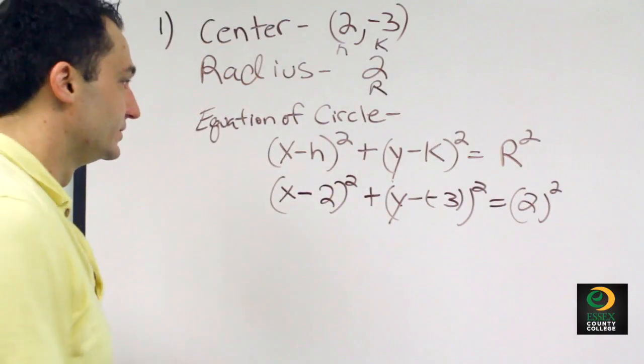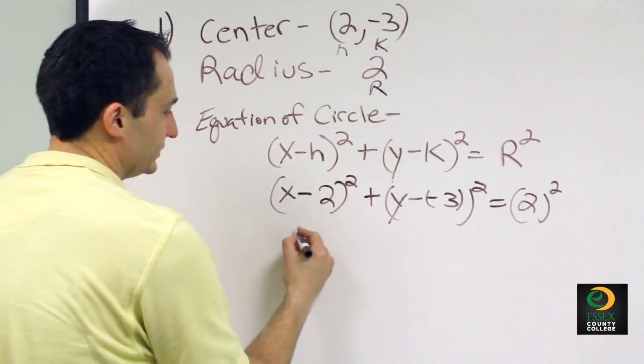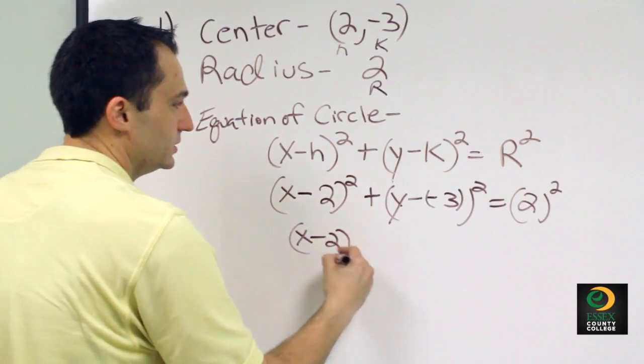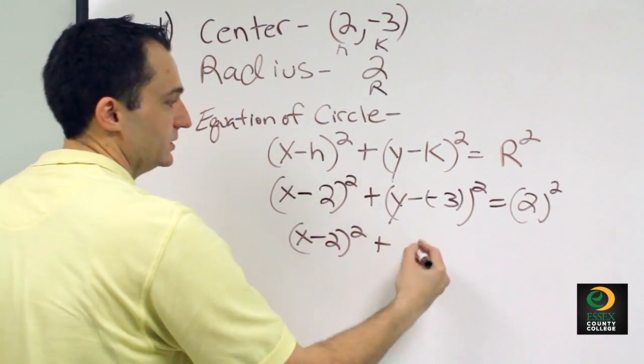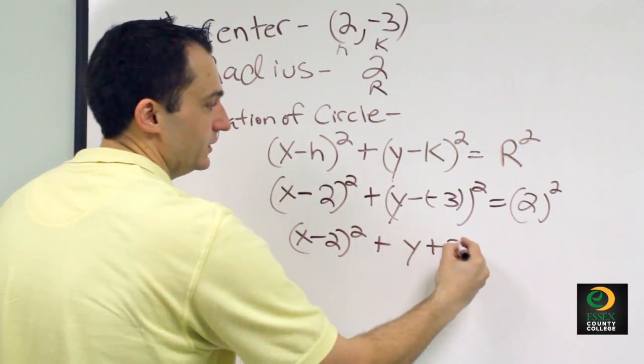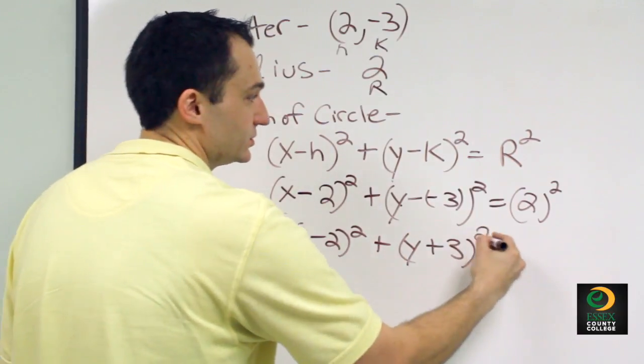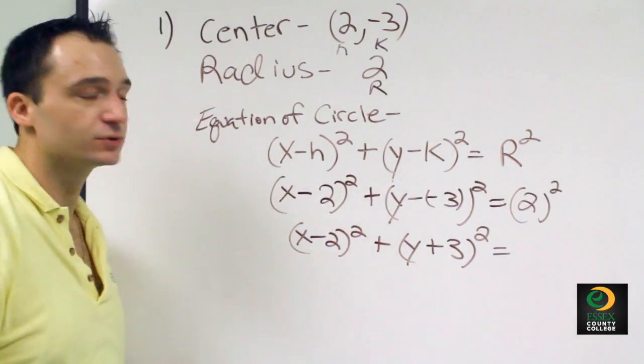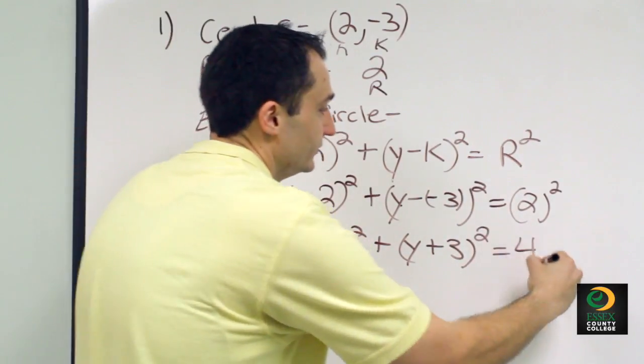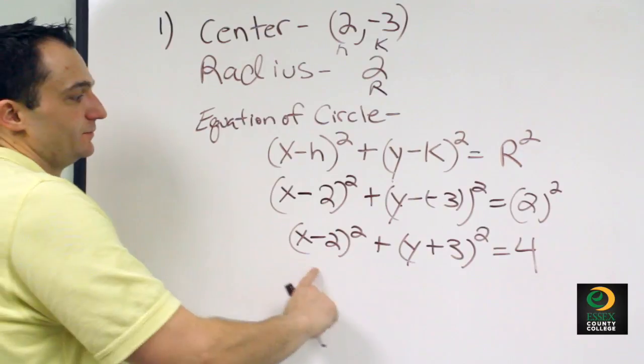So now we just have to simplify this equation. We can't simplify anything in here, so x minus 2 squared plus y - a negative and a negative make a positive - squared is equal to, and 2 squared is equal to 4. So this is your equation of the circle.